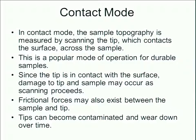In contact mode, the sample topography is measured by scanning the tip, which actually makes contact with the surface and is then scanned across the sample. This is a fairly popular mode of operation, used primarily for hard or durable samples. Since the tip is in contact with the surface, damage to the tip and the sample may occur as scanning proceeds. We can also gather information such as frictional forces, which may exist between the sample and tip, seen due to the pitching or rolling of the cantilever and laser beam deflection on the detector.